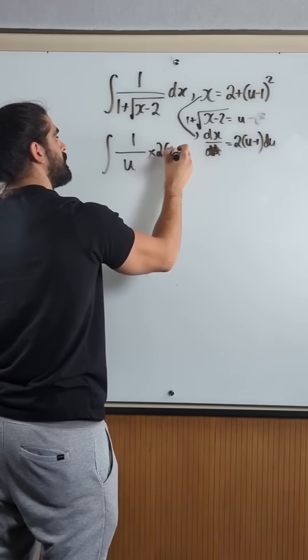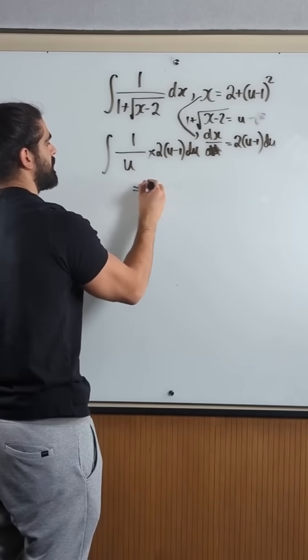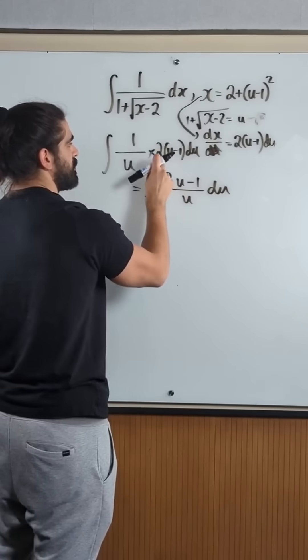So then we get 2, u minus 1, du. The 2 can actually come out of the integral, so we get u minus 1 over u du, because 2 is a multiplier.